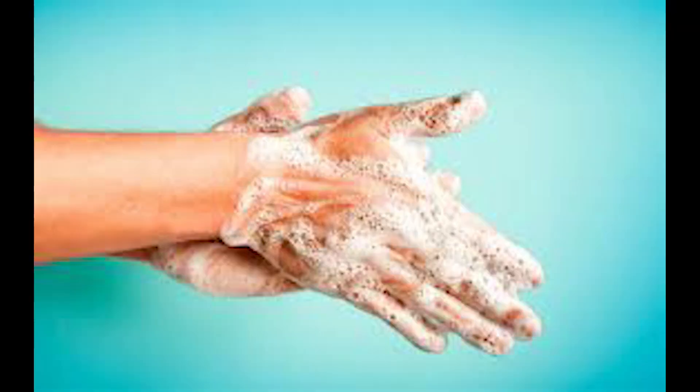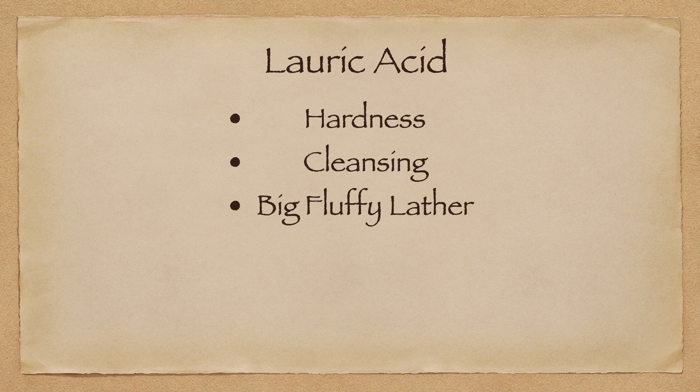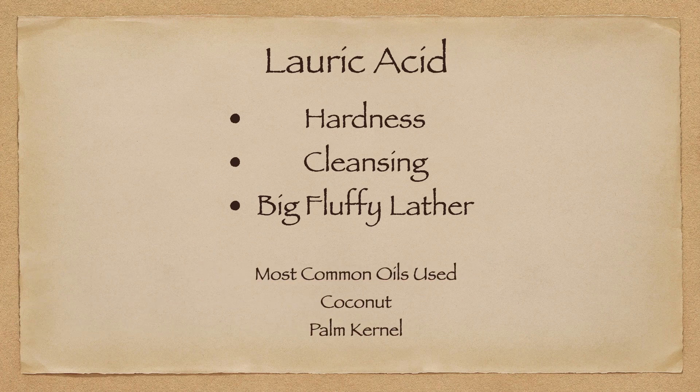Here are some of the common saturated fatty acids we may use in soap making. Lauric acid is a saturated fatty acid that contributes to hardness, cleansing, and having that big fluffy lather. Palm kernel and coconut oil are extremely high in lauric acid. Too much lauric acid in a soap bar recipe may be drying to the skin if not properly balanced with a super fat or a high unsaturated fatty acid content.